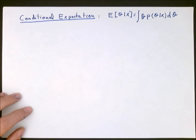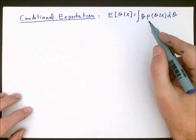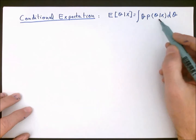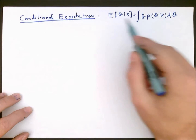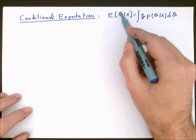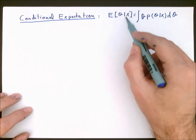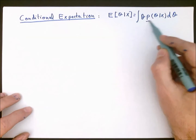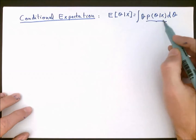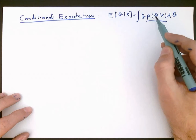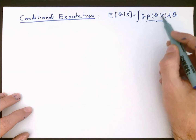The first thing we want to discuss about conditional expectations is how we can actually compute them. In order to compute the MMSE estimator, which is the conditional expectation of the unknown variable given the data, we need this conditional PDF — the posterior PDF of theta given the data.